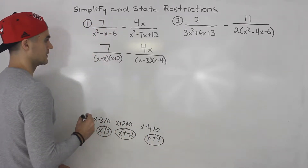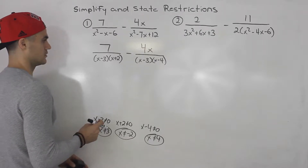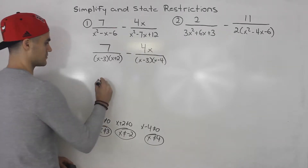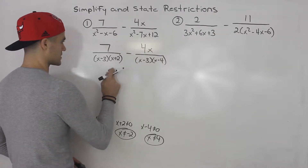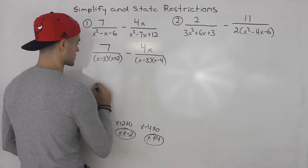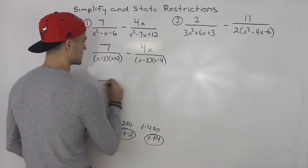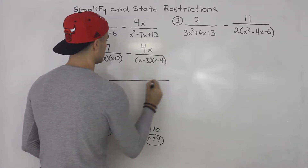And then x minus four cannot equal zero, which means x cannot equal positive four. After that you want to simplify, and since we are subtracting rational expressions you want to get a lowest common denominator.